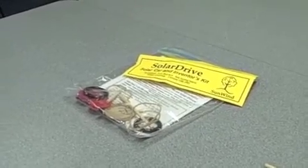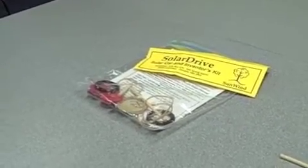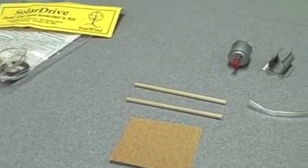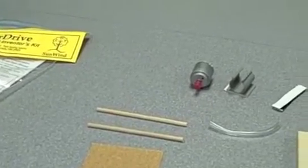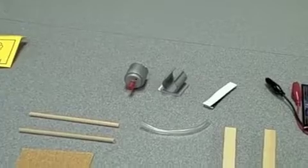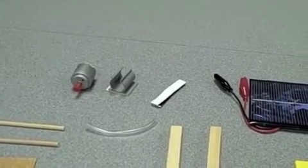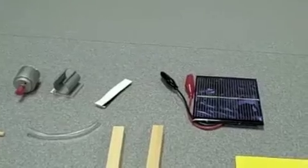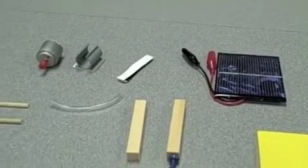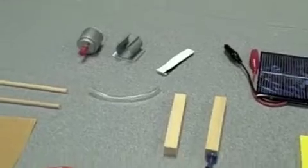We begin by taking out certain pieces we will be using and leaving the others for later. This includes dowels, sandpaper, the motor, the motor mount, tubing, velcro, two wood pieces, and the solar power unit, as well as the base plate.